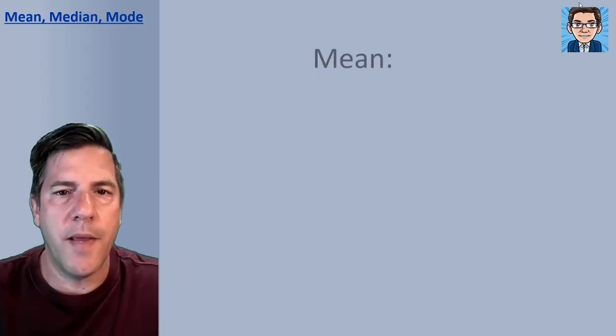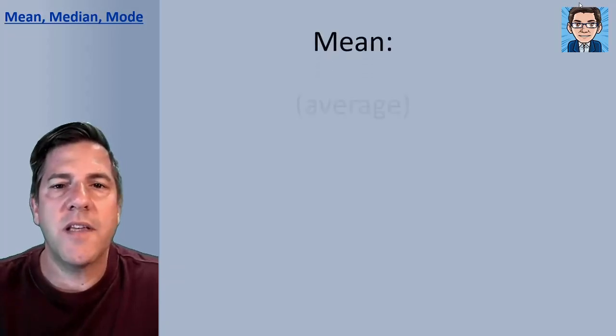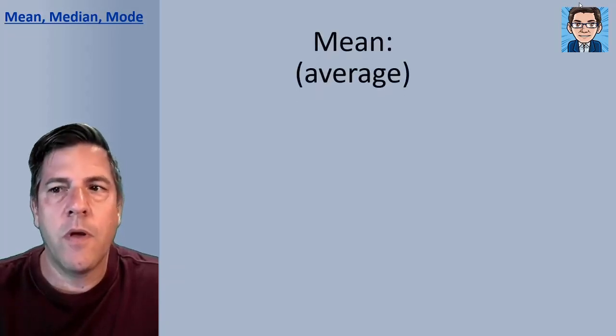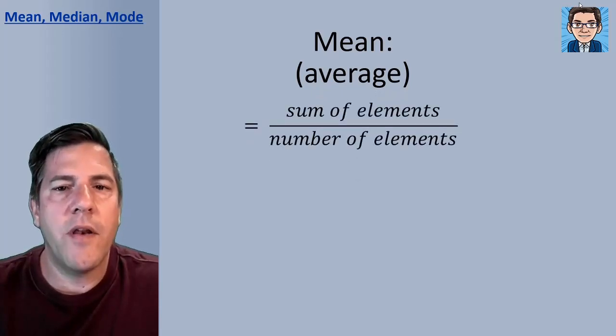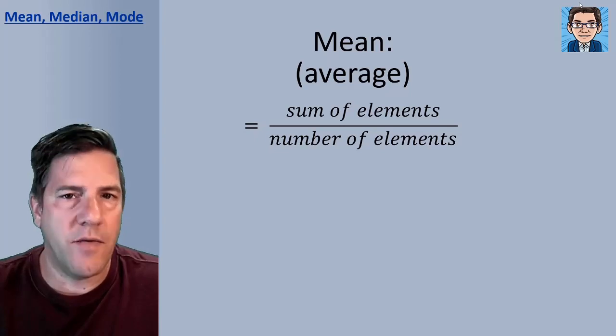Let's first take a look at mean. The mean is going to be the same as the average. So we're going to take the sum of the elements and divide it by the number of the elements, the count of the elements.